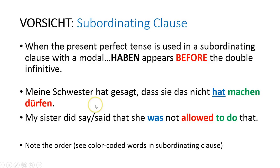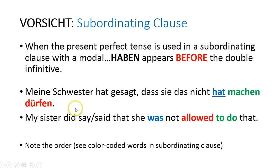For example — zum Beispiel — meine Schwester hat gesagt. That's the independent clause: 'My sister said.' Now we have the subordinating clause: dass sie das nicht hat machen dürfen. Typically you would see this as an independent clause: sie hat das nicht machen dürfen. But now it's a subordinating clause, so hat goes before machen dürfen. My sister did say that she was not allowed to do it. That's the helping verb haben, then dürfen — 'not allowed' — then machen — 'to do or to make.'